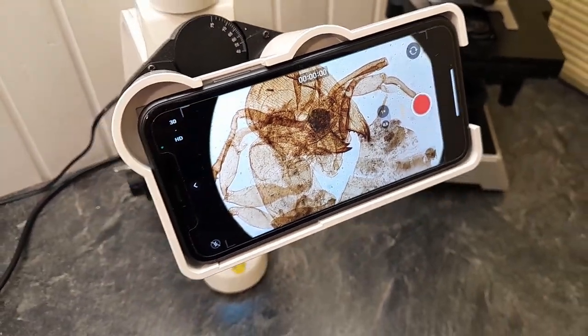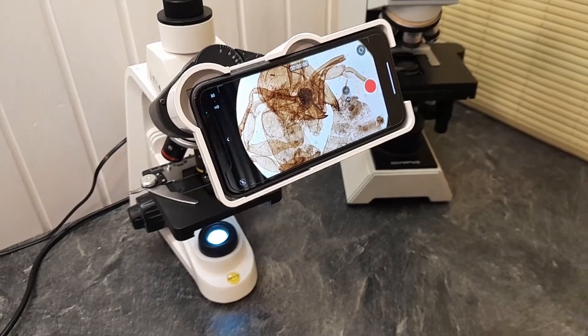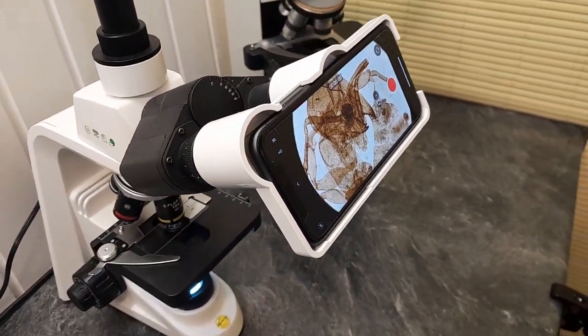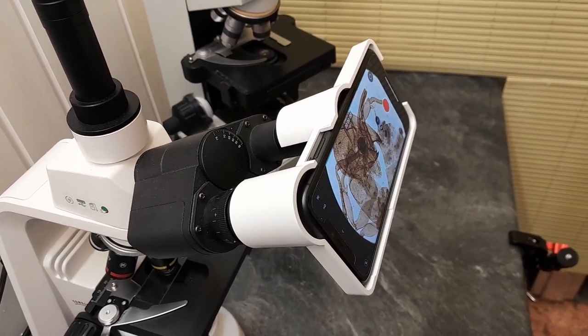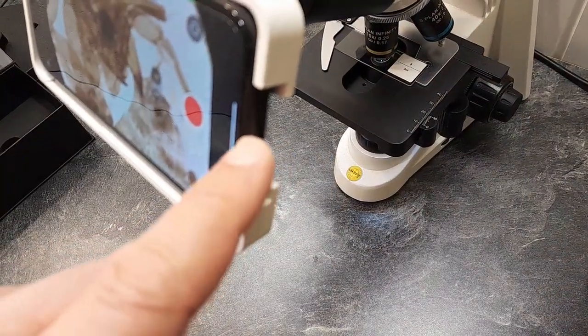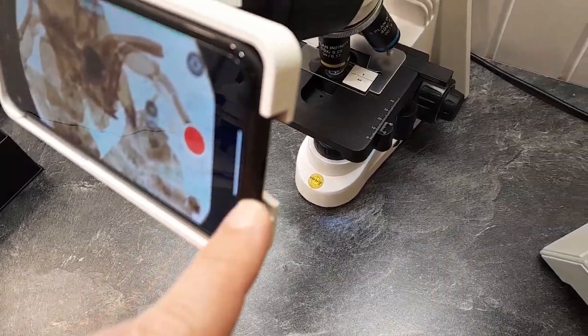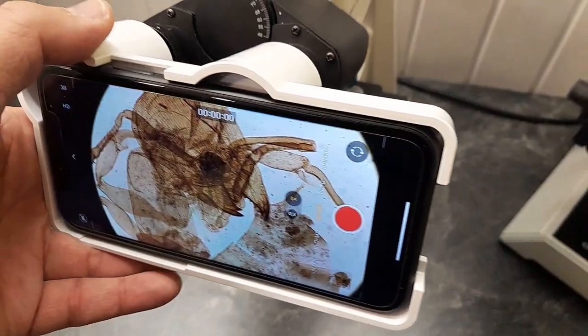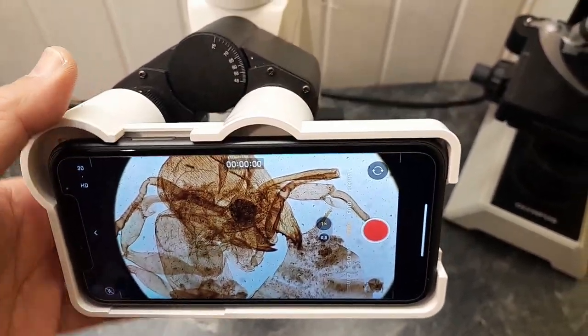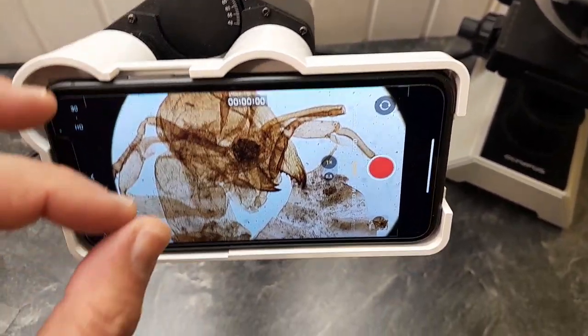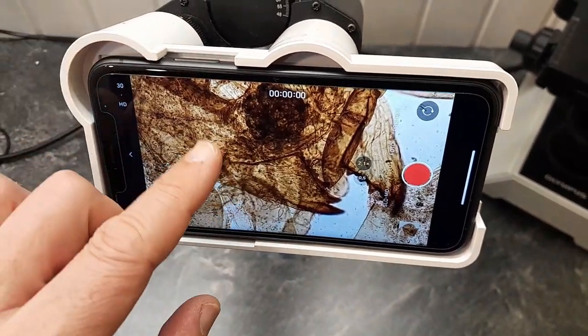So this is now the adapter fitted to a compound microscope here and the principle is of course pretty much the same and you can of course as you see here use the mobile phone also as a viewing screen. The controls of the mobile phone are easily accessible so you can see that the button of the mobile phone on the top is easily accessible. Of course you can also pinch and zoom to get different fields of view.